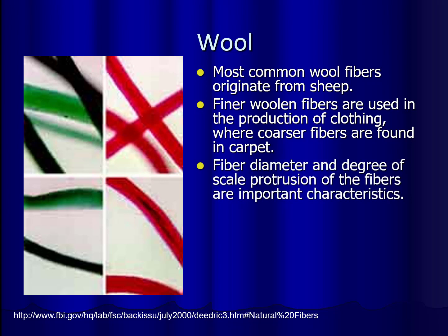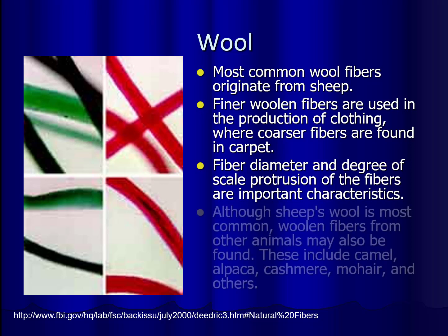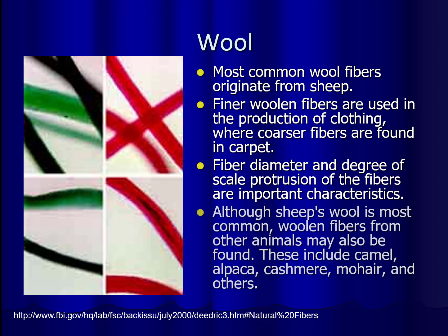The fiber diameter and scale protrusion are something we'll talk more about when we discuss hairs. Although sheep's wool is the most common form of wool, you can also get wool from other animals like camel, alpaca, cashmere, and mohair — mohair happens to come from a goat.